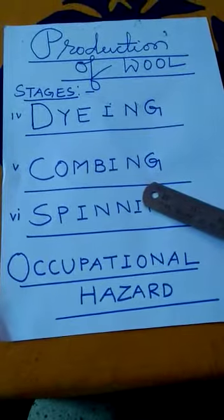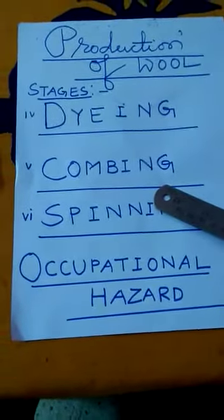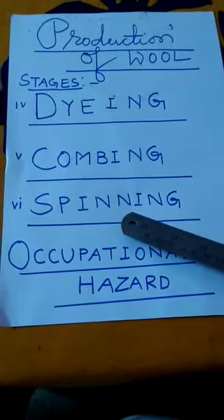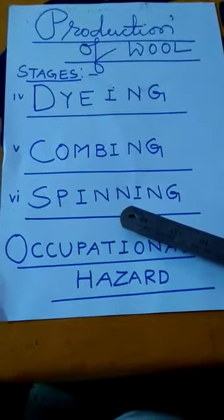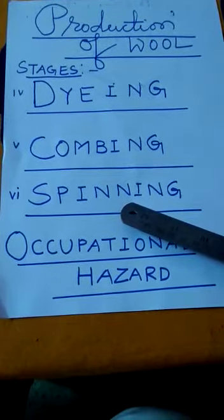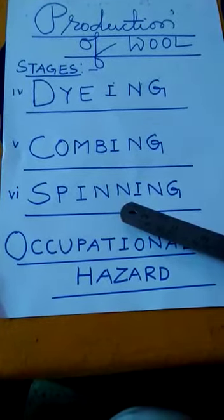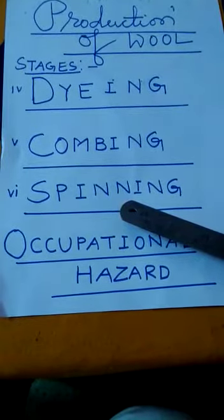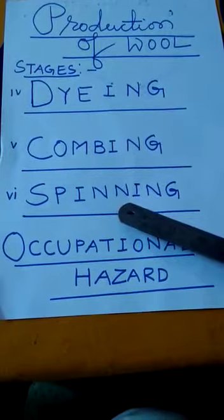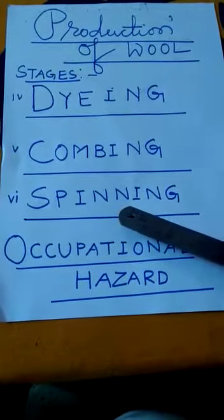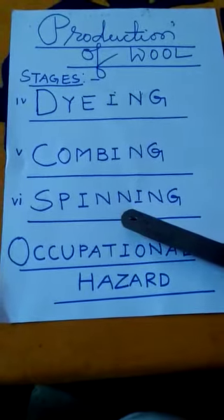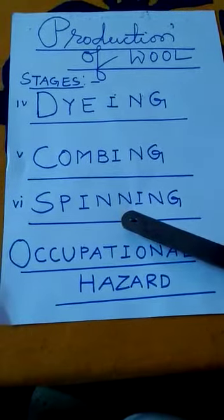The last stage of the production of wool is spinning. The long woolen fibers are spun into thick yarn called wool, which is used for knitting sweaters, etc. The short woolen fibers are spun into fine yarn and then woven on a loom to make woolen cloth, like shawls, etc.